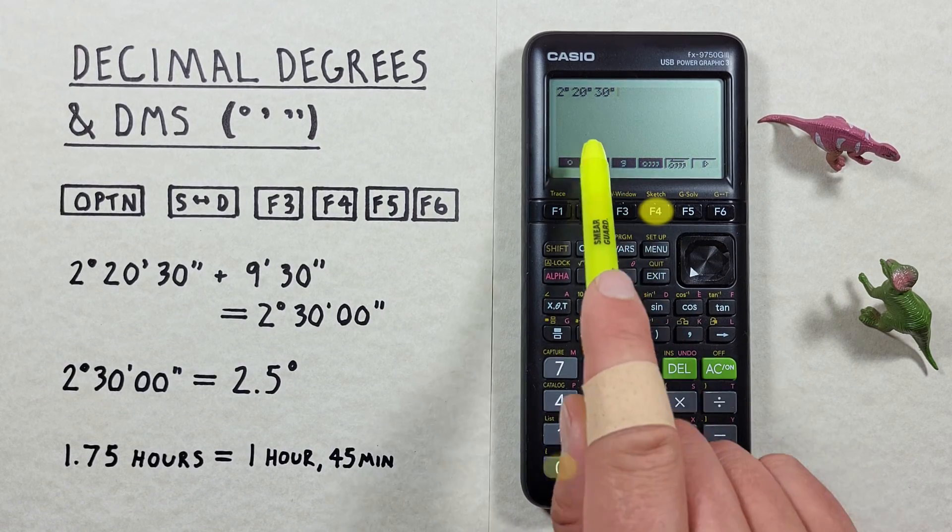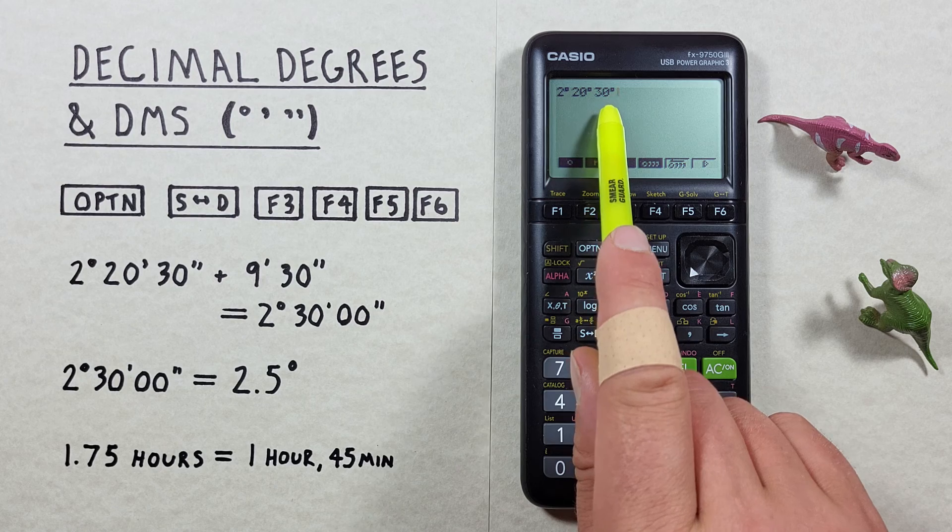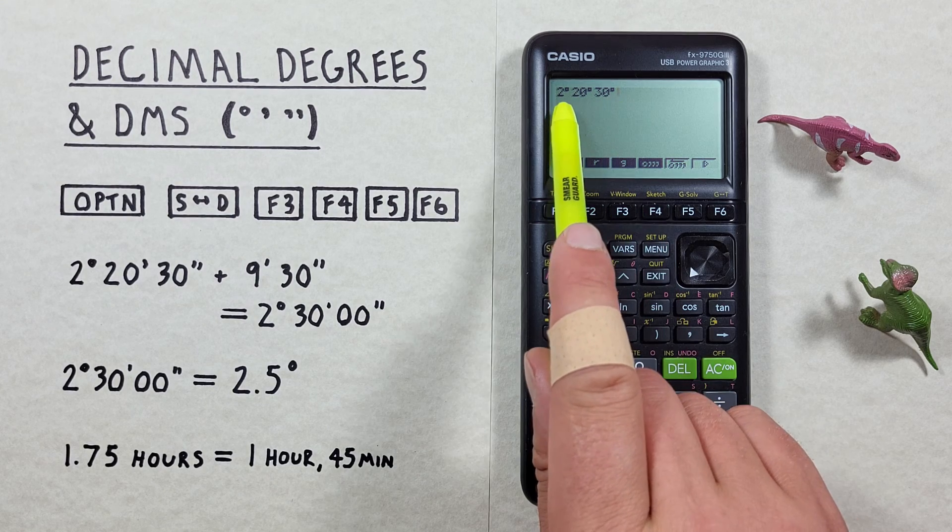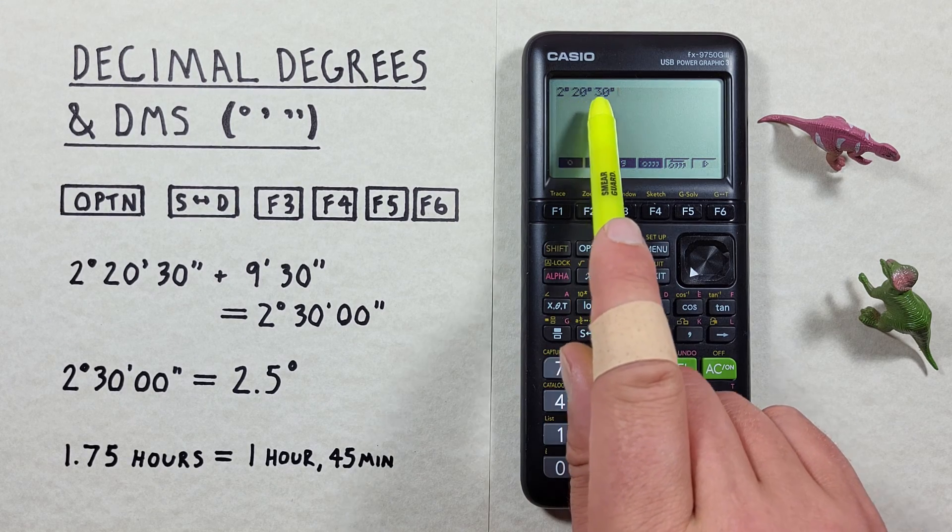Then 30 seconds and then we hit F4 again. And again we get that symbol which in this context represents seconds. So we have two degrees, 20 minutes, 30 seconds.